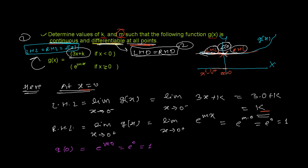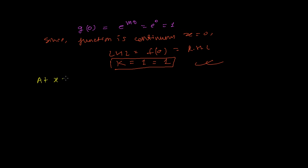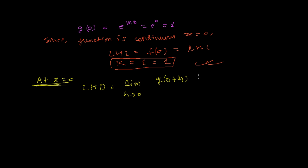Now we need to find the value of m. We cannot find m just from continuity, so we use differentiability. We'll find the left-hand derivative and right-hand derivative at x equals zero and set them equal. The left-hand derivative is: limit as h tends to 0 minus of [g(0 + h) minus g(0)] divided by h, from the definition of the derivative.